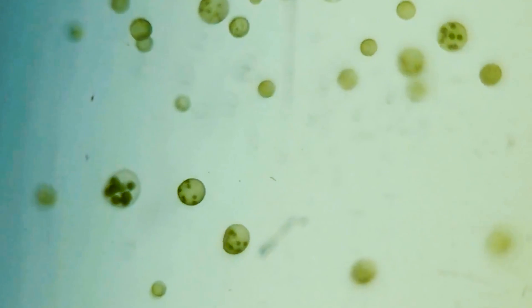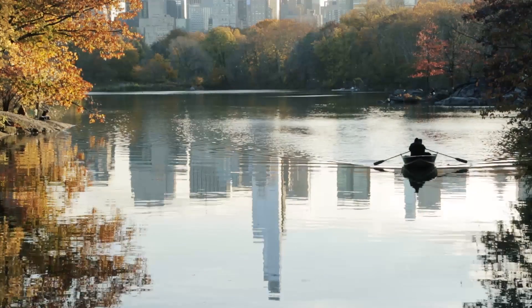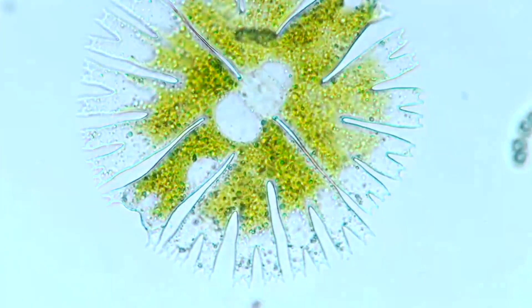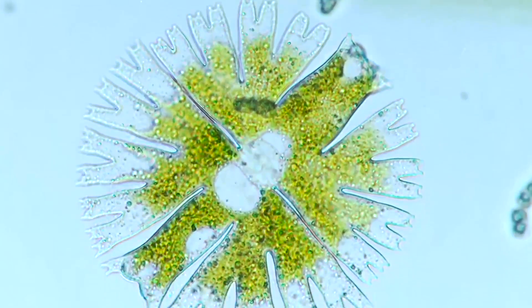I'm Eun-Soo Kim, assistant curator of microbial diversity and systematics in the Division of Invertebrate Zoology. So you can find algae in most of the aquatic environments, like pond water in Central Park. You just put a drop of water on the microscope slide and take a look at them, then you will find at least some of them swimming.